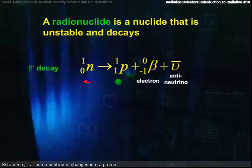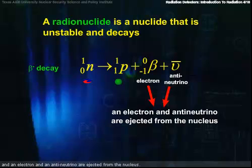Beta decay is when a neutron is changed into a proton and an electron and an antineutrino is ejected from the nucleus.